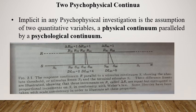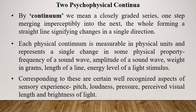In any psychophysical investigation, the assumption is that there are two quantitative variables. There is always a physical continuum, and parallel to it there is a psychological continuum. By continuum, we mean a closely graded series — one step merging imperceptibly into the next, with no gap, the whole forming a straight line signifying changes in a single direction.